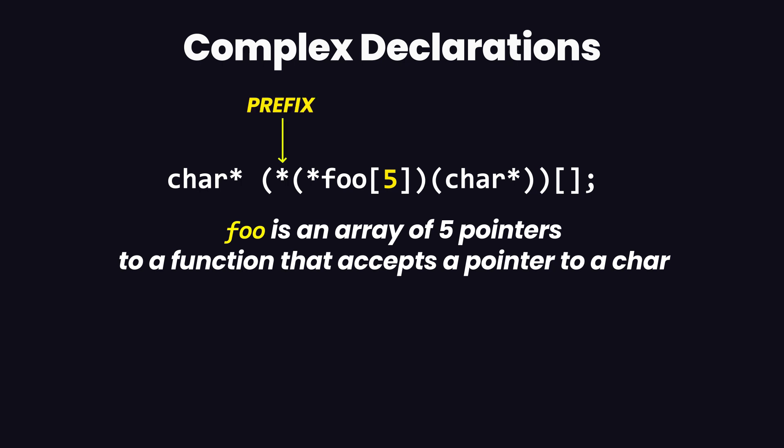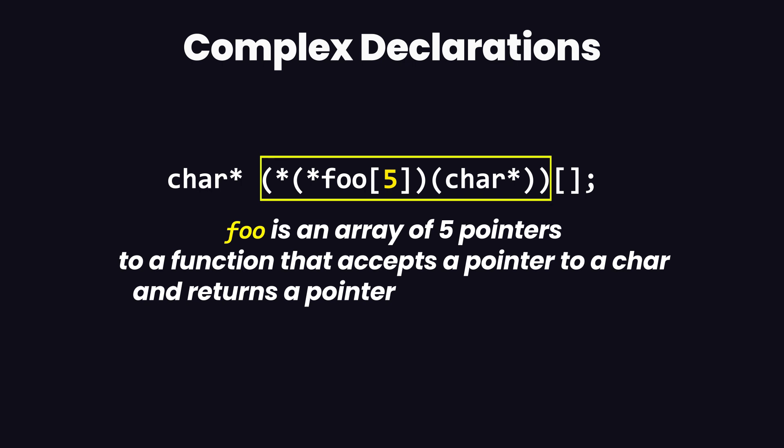Now that we have solved the inner parenthesis, we have the prefix to those parentheses which is the asterisk symbol. Since one of these parentheses was a function, this means that this asterisk is the return value. So now we can say that foo is an array of five pointers to a function that accepts a pointer to a character and returns a pointer to something. Following the precedence rules, we come out of these parentheses and see the postfix, which is an array.